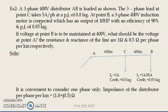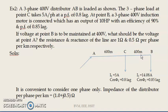Let us analyze this problem. The distributor AB is given and there are two nodes — one at point C and another at point B. C is 600 meters from point A, and B is 400 meters from point C. So in total, B is 1 kilometer away from point A.